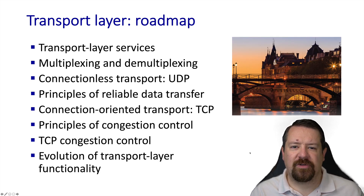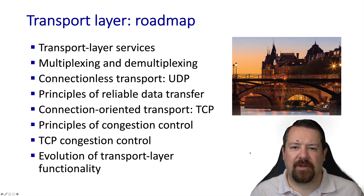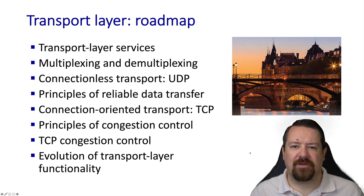As we move forward, we will first look at the services provided in a generic sense, including multiplexing and demultiplexing. Then we'll see some specifics of UDP, then look at principles of how reliability can be handled over an unreliable network, then how TCP handles reliability, then congestion control principles, followed by how TCP specifically handles congestion control.